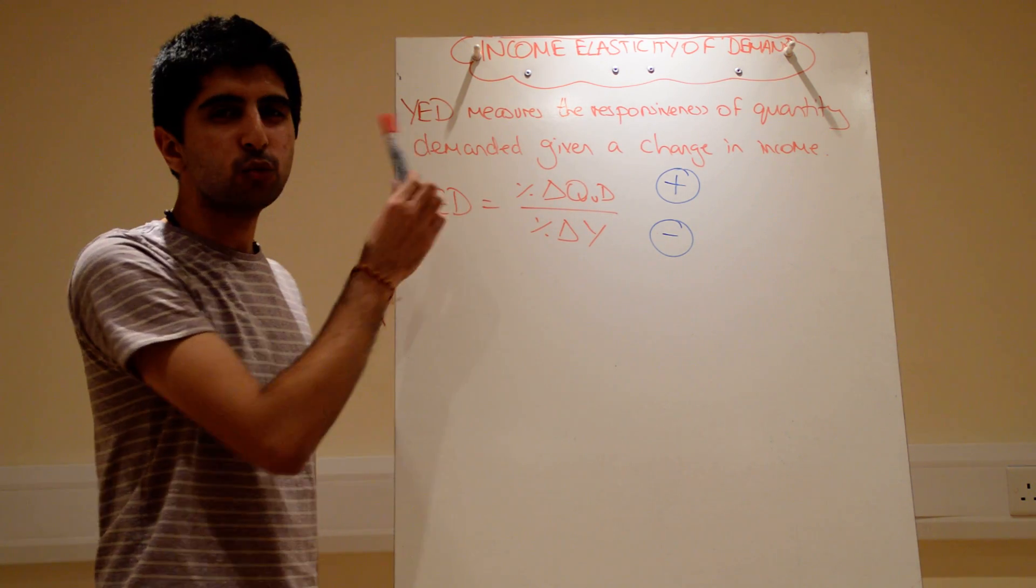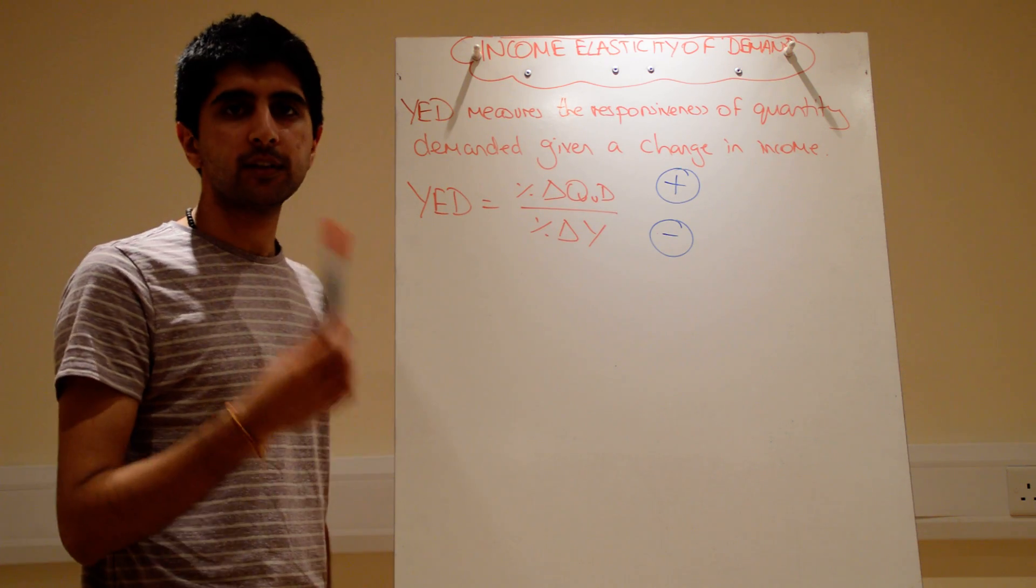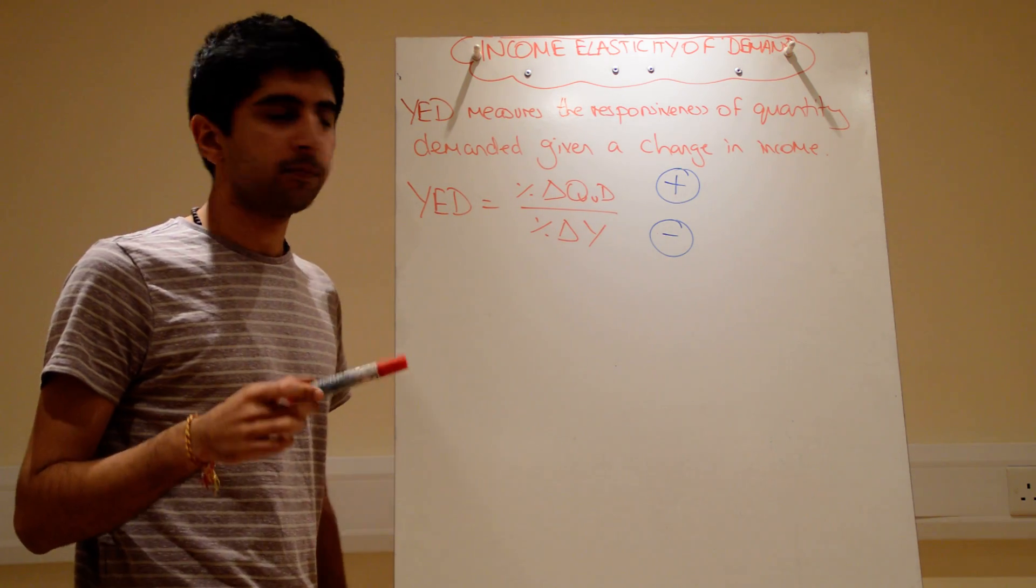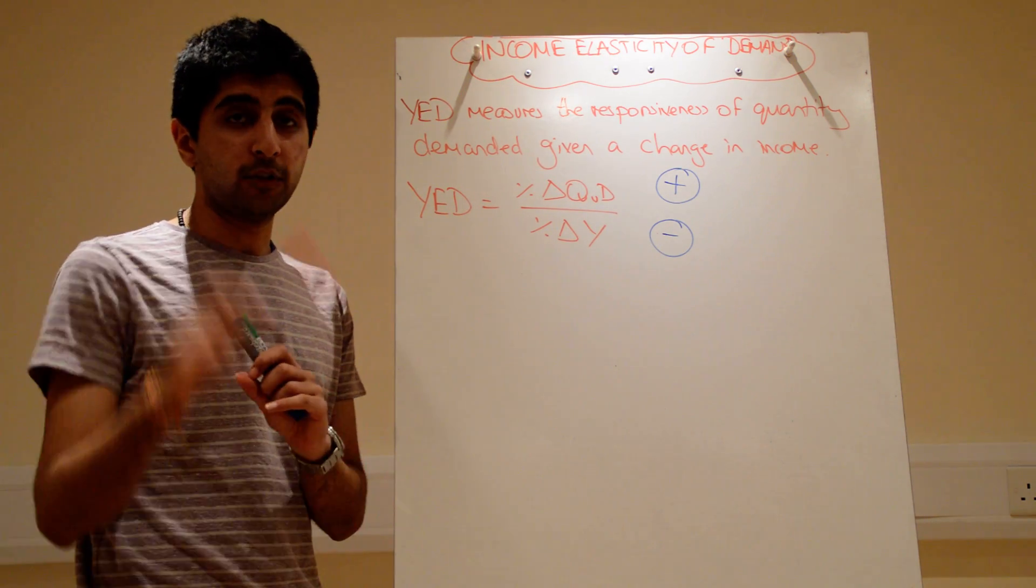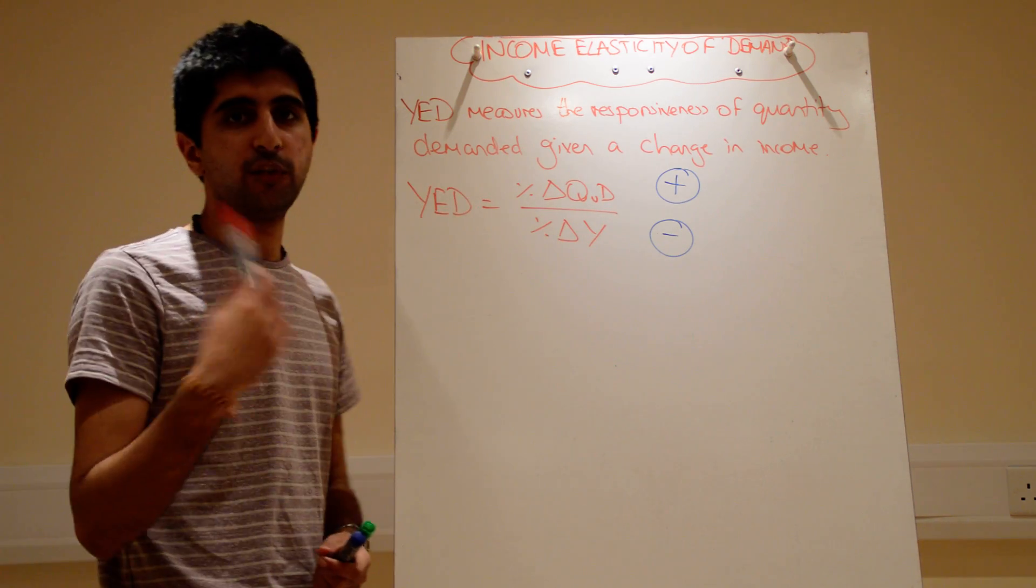So the actual definition, we now use Y. In economics, income is the letter Y. Capital I is investment, small i is interest rate. So we use Y for income in economics.